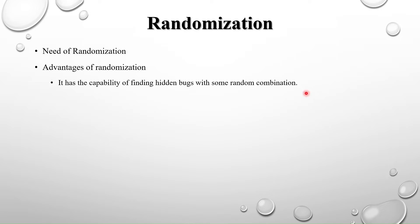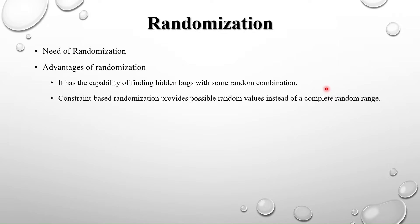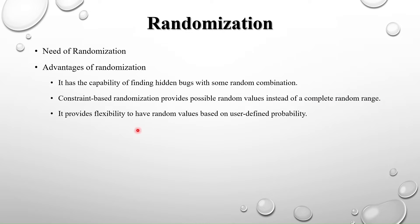Now let's look at the advantages of randomization. First, it has the capability of finding hidden bugs with some random combinations. Second, constraint-based randomization provides possible random values instead of a complete random range — using constraints, we can get specific values without trying every possible value in the range.